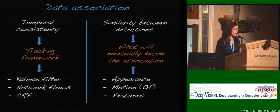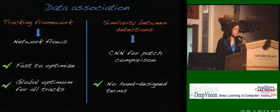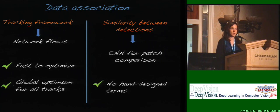In this paper we advocate that with a simple tracking framework such as network flows — which is fast to optimize and gives us the global optimum for all tracks — if we feed it with a proper similarity value between detections, then we can achieve a real boost in tracking accuracy.